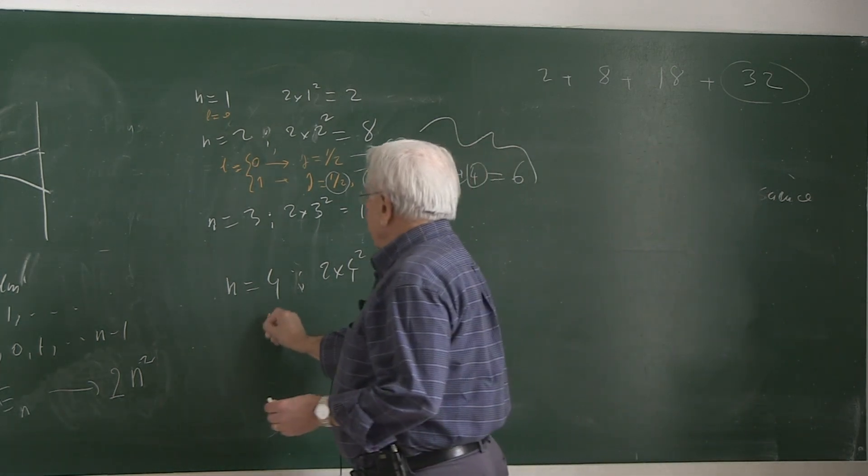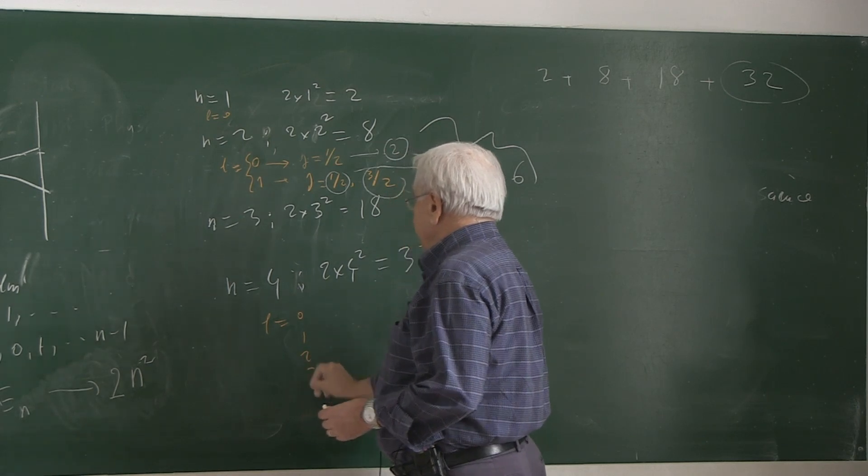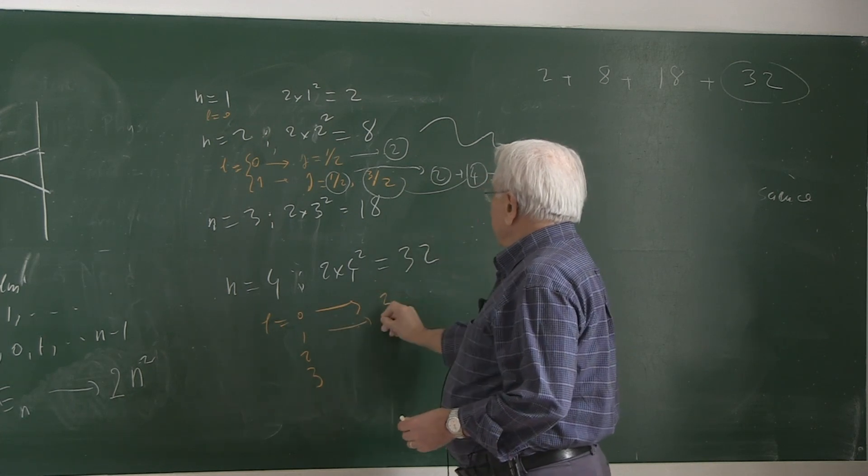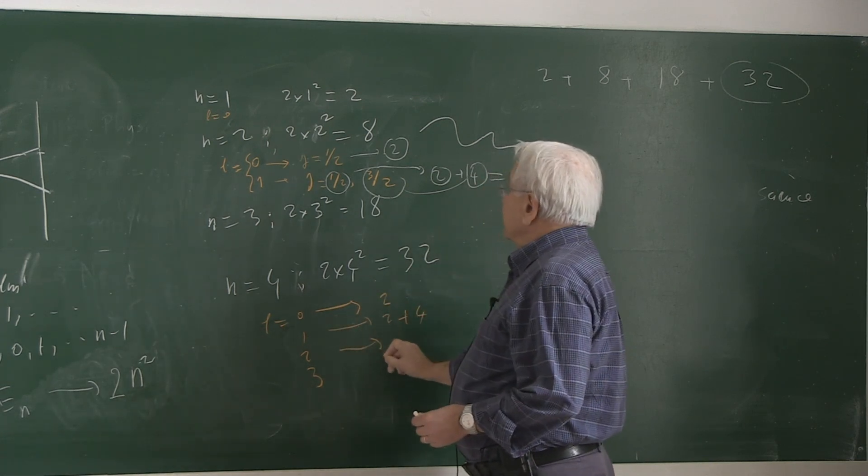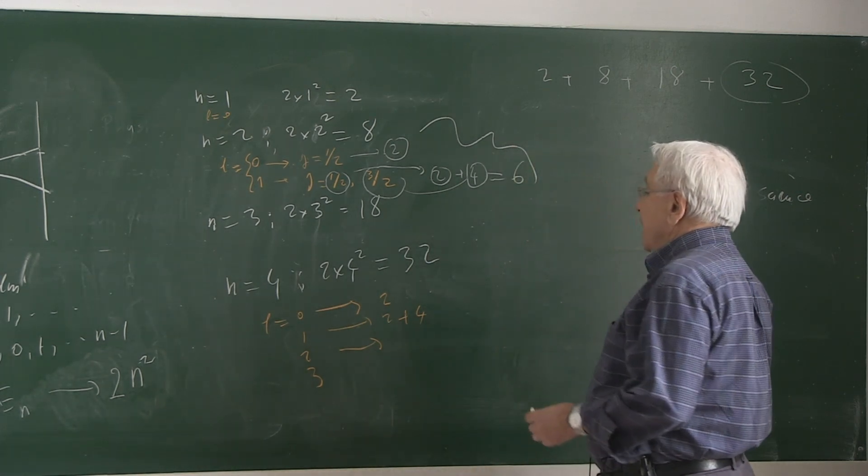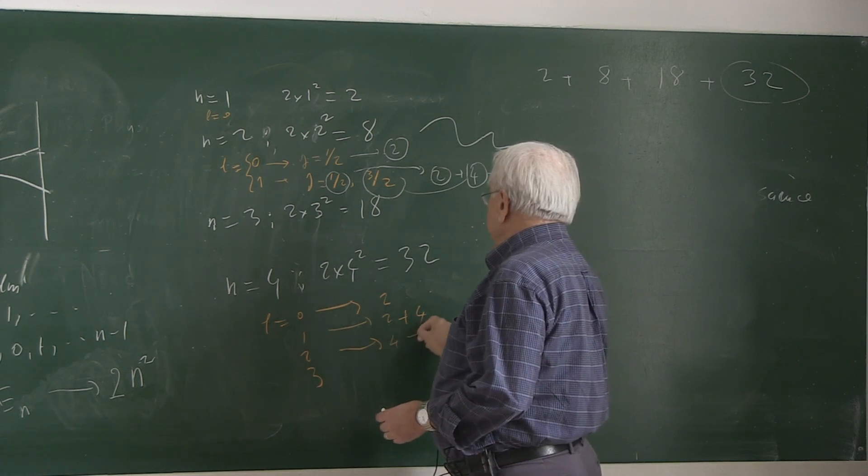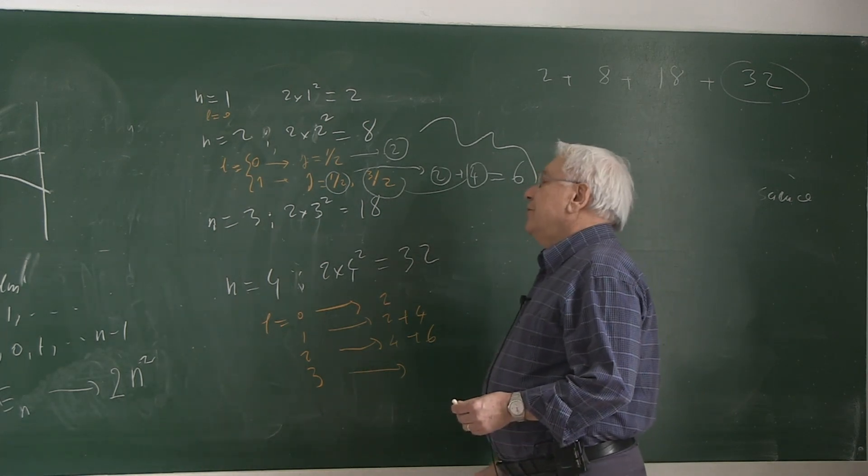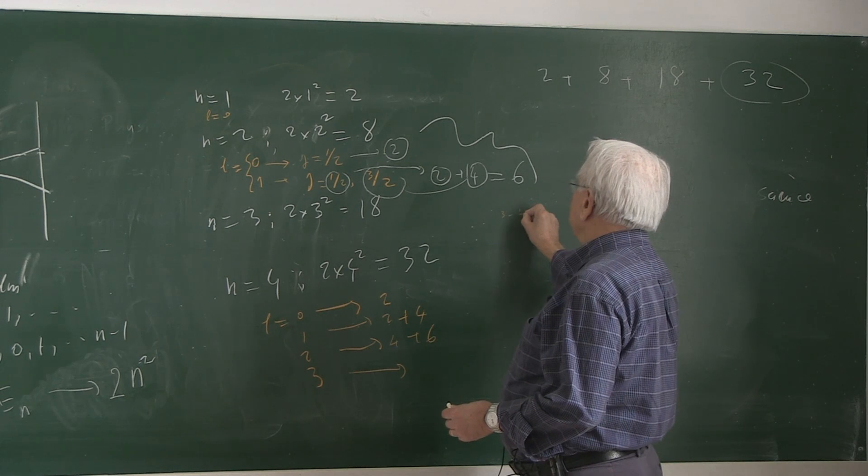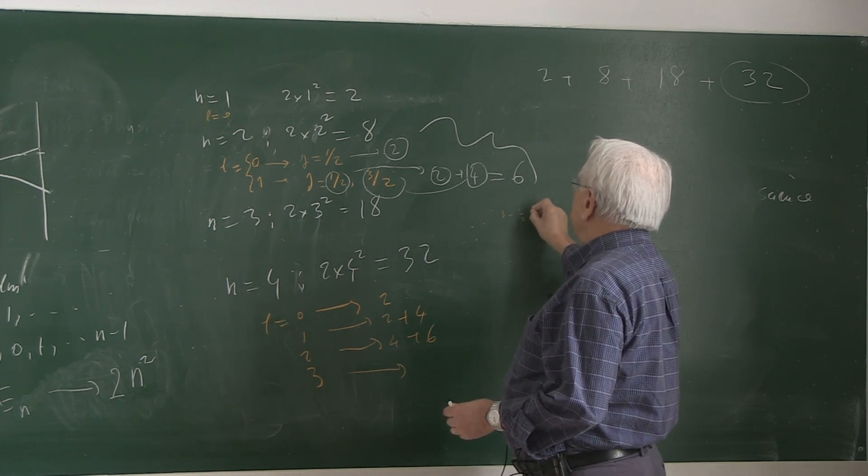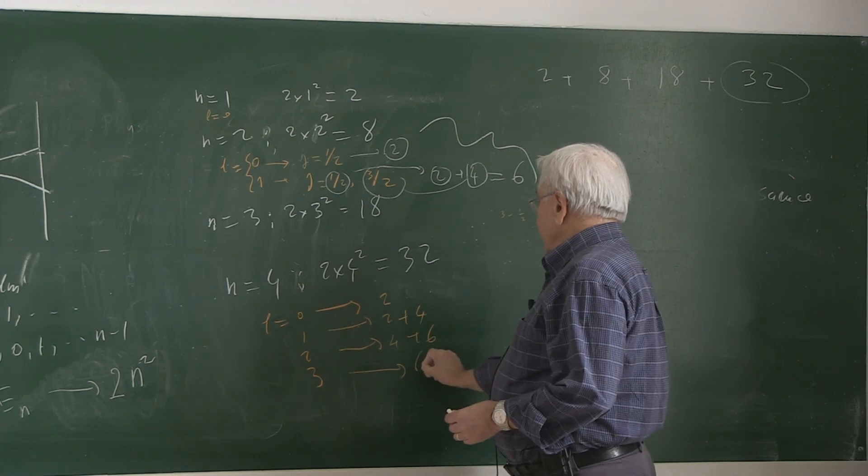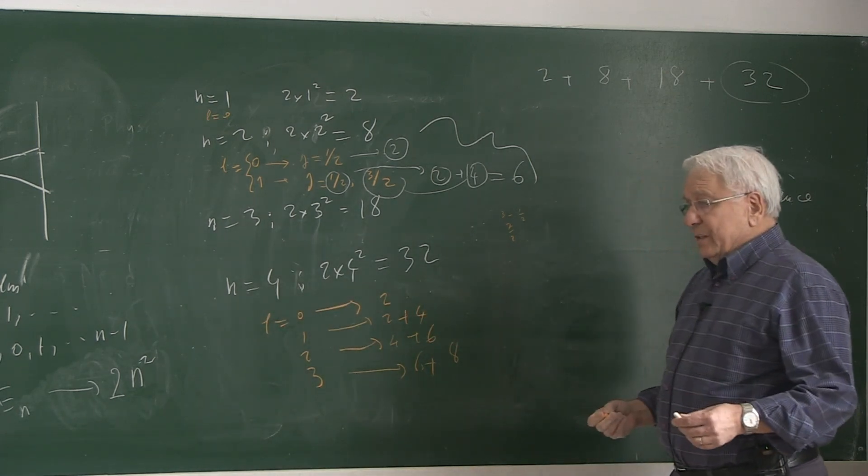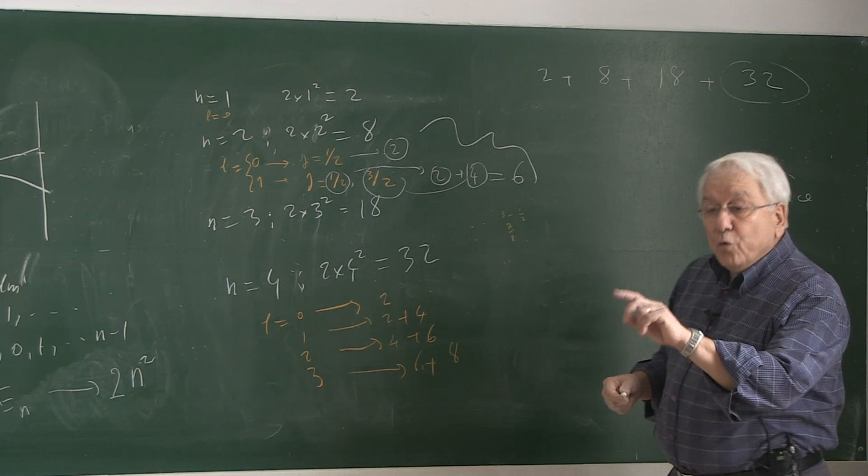Let me analyze the N equals 4 case. N equals 0, 1, 2, 3. N equals 0 is J equals 1 half. There are 2. J equals 1, you have 2 plus 4. J equals 2, there is 3 half plus 5 halves, 4 plus 6. There is J equals 3, 3 minus 1 half is 6, 5 by 2, 6 plus 7 by 2, 8.